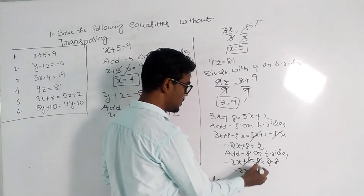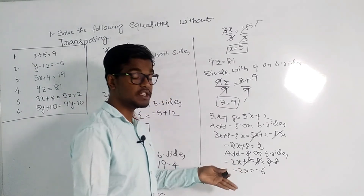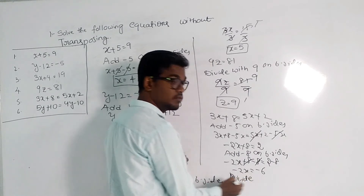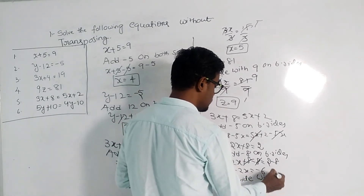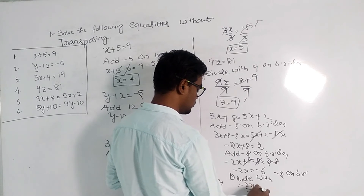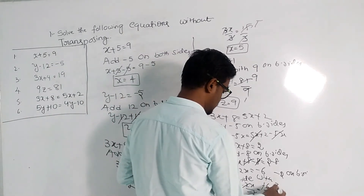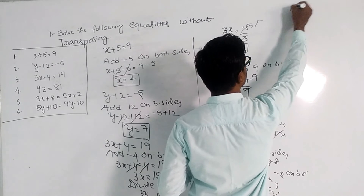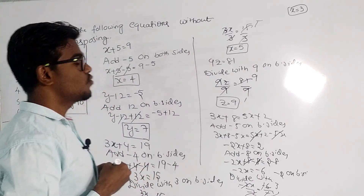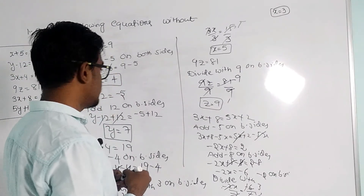Now we add minus 8 on both sides to remove the plus 8 from the left side. So minus 2x plus 8 minus 8 equals 12 minus 8. The plus 8 and minus 8 cancel, giving minus 2x equals minus 6. We then divide both sides by minus 2. The minus 2s cancel and x equals 3.